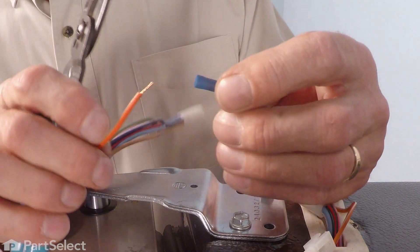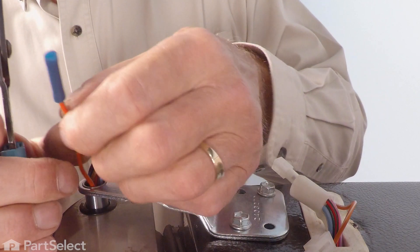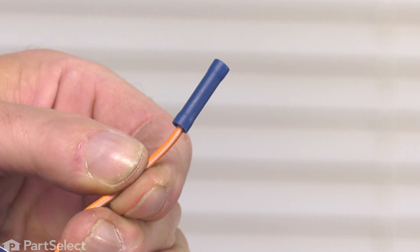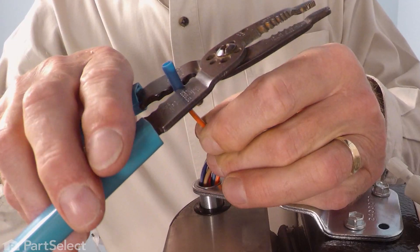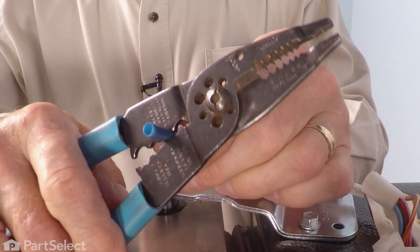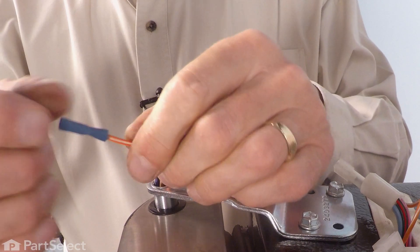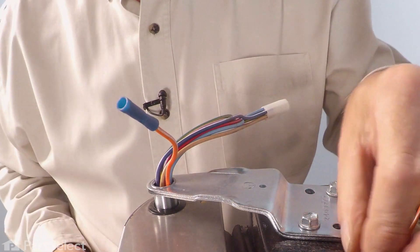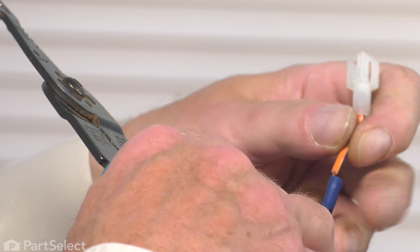We'll begin by sliding that connector over the end of the wire, and then we'll crimp that in place. We'll just tug on that and make sure we have a nice tight connection. We'll insert the other end and do the same.